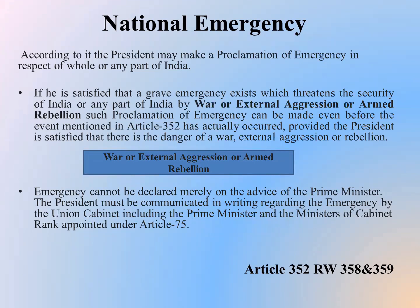So firstly, we are going to discuss about national emergency. According to it, the President may make a proclamation of emergency in respect of whole or any part of India, if he is satisfied that a grave emergency exists which threatens the security of India or any part of India by war, external aggression, or armed rebellion. Such proclamation of emergency can be made even before the event mentioned in Article 352 has actually occurred, provided the President is satisfied that there is a danger of war, external aggression, or rebellion.